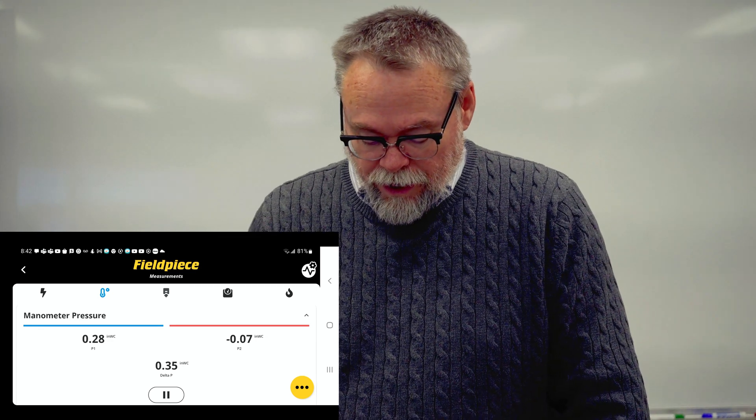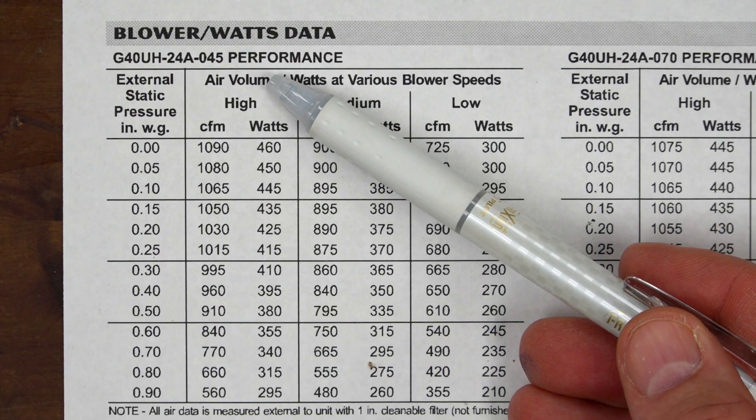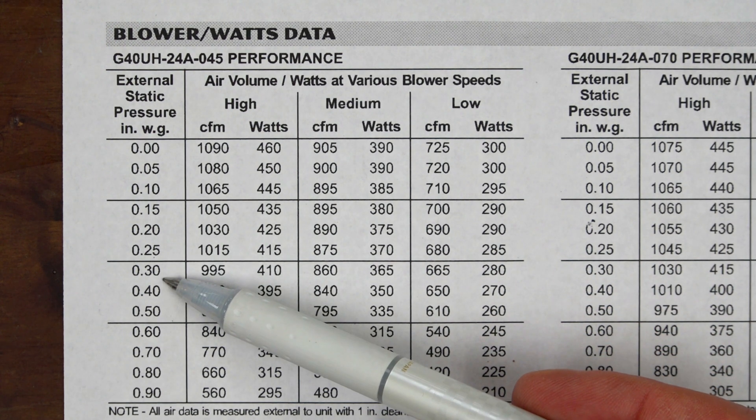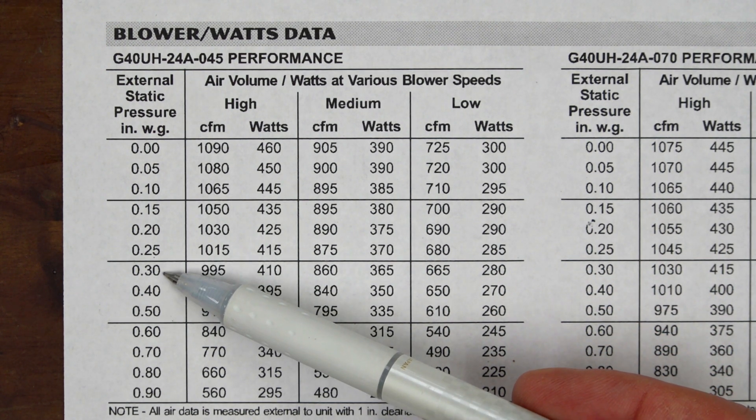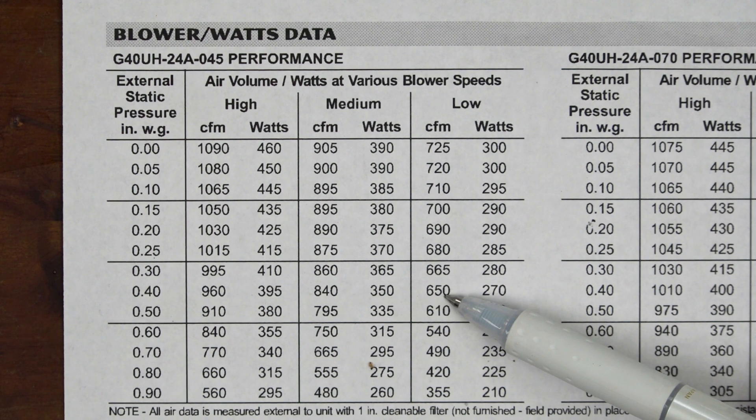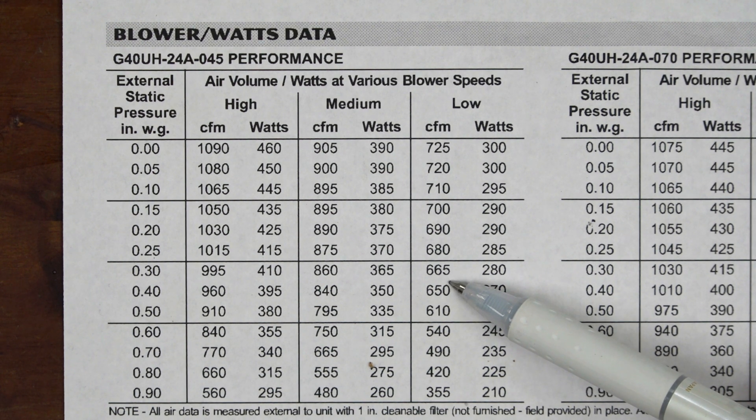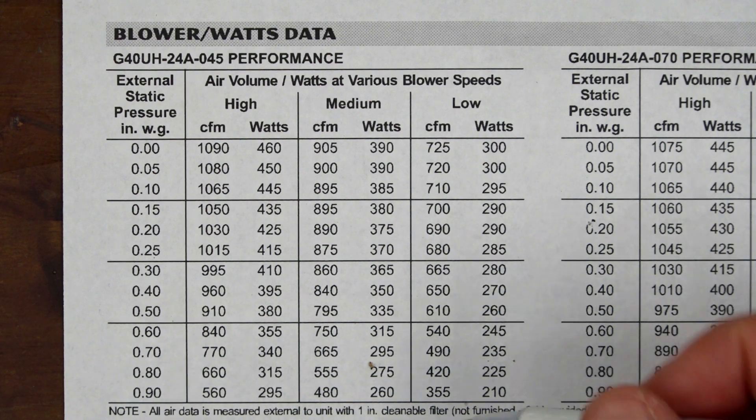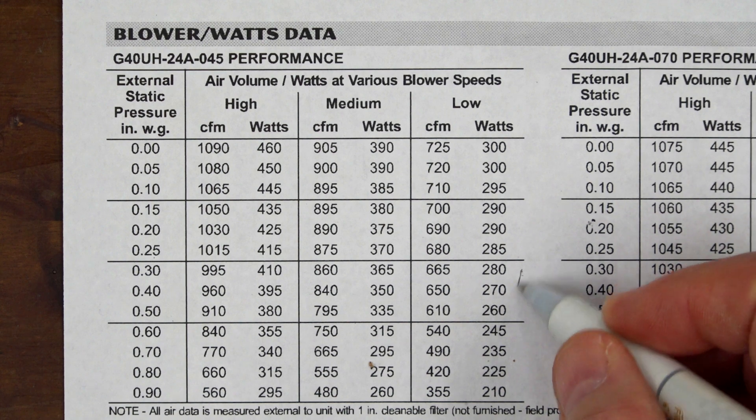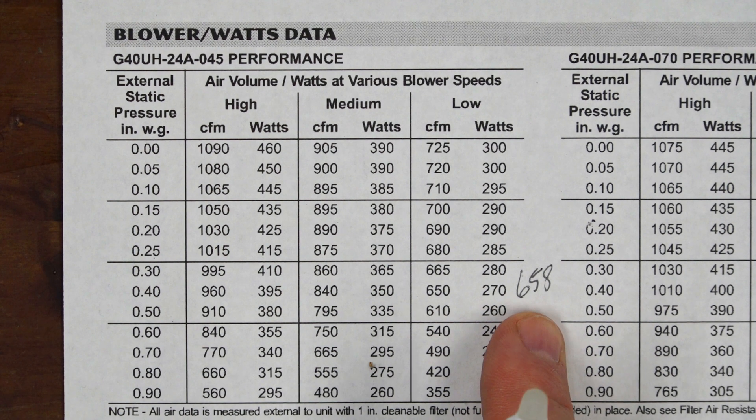If you take a look at, this is the blower tables right here. This is the G4024A45. This is this particular furnace. What we want to do is we want to go down to our static pressure, external static pressure, which is 0.35, which is right in between 0.30 and 0.40. And we know it's on low speed. So we come across and at 0.3, it's 665. And at 0.40, it's 650. So we're going to cut that in half. We're going to make this about 658 CFM, somewhere in between here. Let's plug in an estimated 658 CFM. So 658 is what we're going to use for our CFM.